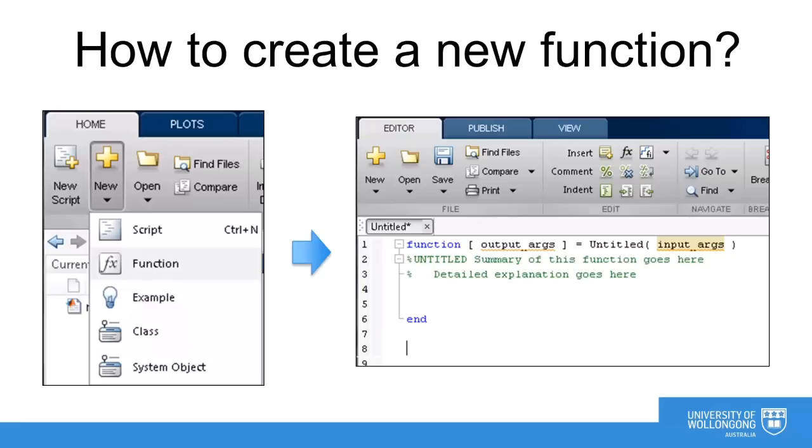After the equal sign, the default name for this function is untitled, but of course we can change that. And finally, inside the round brackets is where we place the input or multiple input arguments.